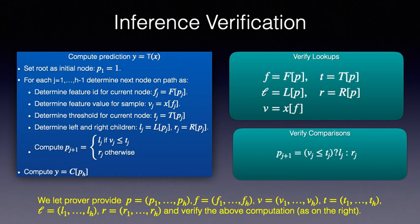So how do we verify that above algorithm is done correctly by the prover? As usual, we let prover supply all the values involved in the computation. That is, for each step of traversal, the prover supplies the node id, feature id, the threshold, the feature value, the ids of the left and right children, etc. The correctness of the entire computation reduces to correctness of lookup relations in the green box on the top right and the correctness of comparisons in the green box below it. Now we simply need to do an aggregate verification across all samples.